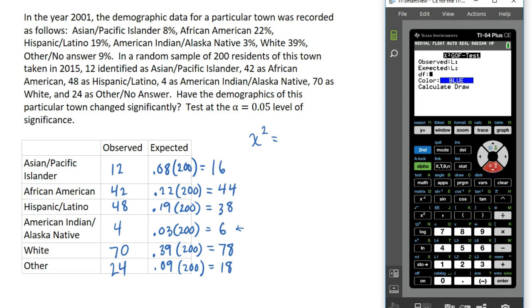Make sure you have the correct lists listed here. I put the observed data in L1 and the expected data in L2. The degrees of freedom here is the number of categories minus one. Our distribution had six categories, so that is five degrees of freedom. Then I'm going to calculate and it gives me a chi-square value of about 28.3.